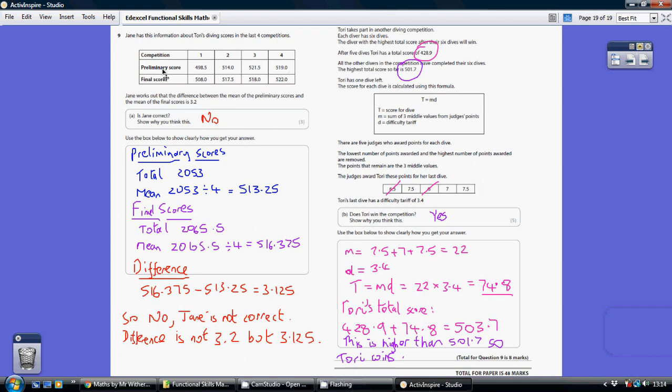So for the preliminary scores, I've added these four together to get 2,053. I've then divided it by the four numbers—1, 2, 3, 4—to give me a mean average for the preliminary scores of 513.25.